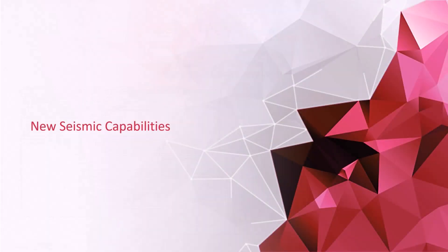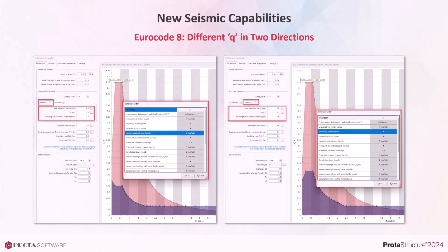With each new version, we extend our seismic capabilities to support more scenarios and provide more productivity. ProtoStruxure 2024 is no exception to this. In ProtoStruxure 2024, we reviewed the Eurocode 8 behavior factor and how they are handled in analysis. In previous versions of ProtoStruxure, it was only possible to use a single behavior factor for two perpendicular directions. With ProtoStruxure 2024, you can now assign different behavior factors to different orthogonal directions.